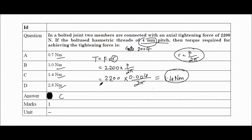Friends, just remember these two formulas: T = F × r, and r = p/2π. Let's move to the next question.